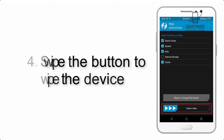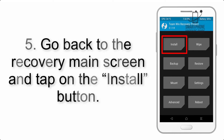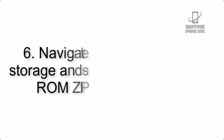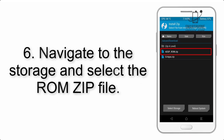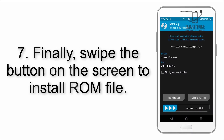Step 4: Swipe the button to wipe the device. Step 5: Go back to the recovery main screen and tap on the Install button. Step 6: Navigate to the storage and select the ROM zip file.